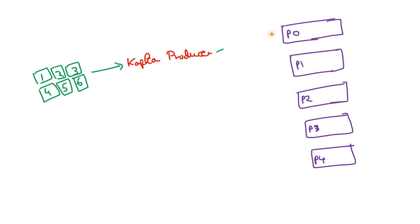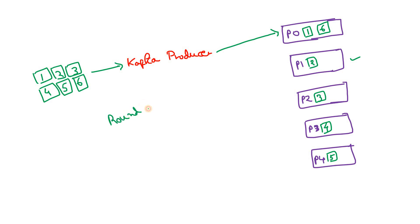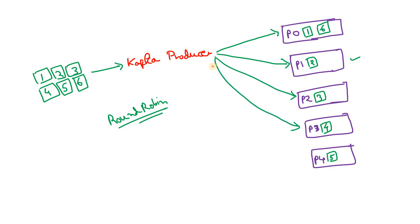How do messages get distributed? One approach is round-robin fashion. The first message goes to partition 0, the second to partition 1, the third to partition 2, the fourth to partition 3, the fifth to partition 4. When there are no more partitions remaining, the sixth message goes back to partition 0. This is the simple round-robin approach Kafka can follow when the key is null.